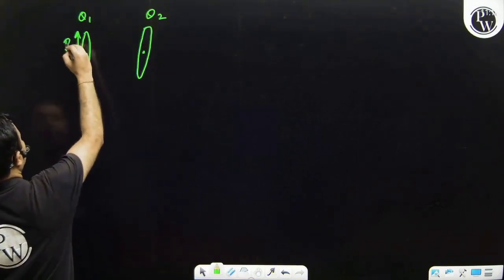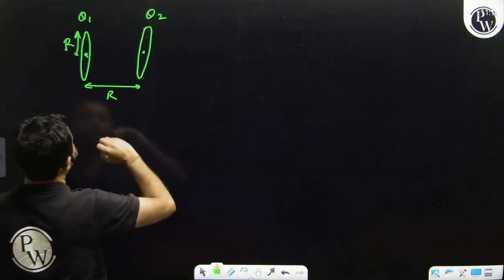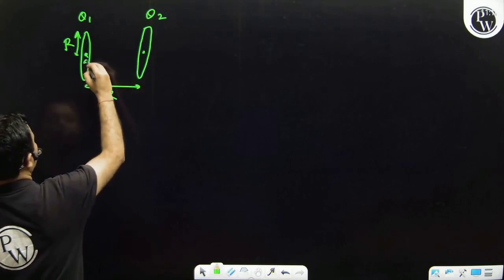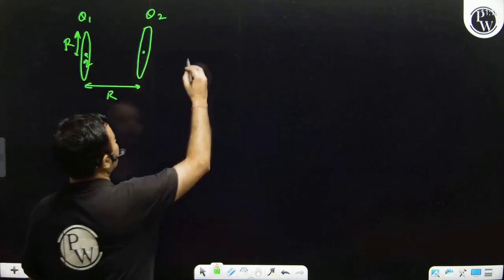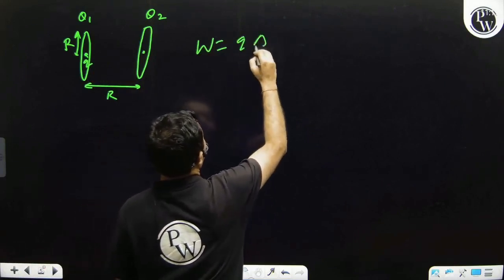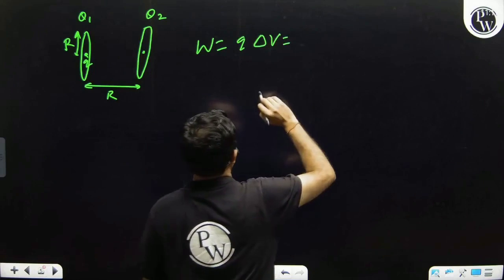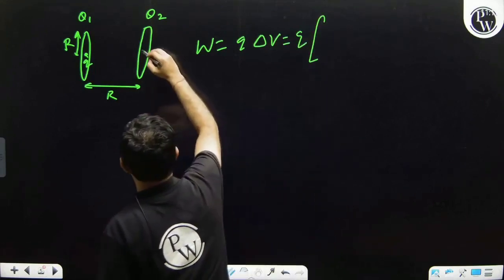So if the radius is R then distance between rings is also R. So let's say we have to move a charge small q from this point to this point.